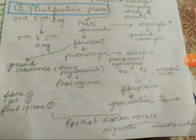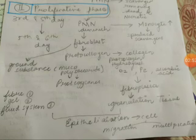In this phase, collagen is formed from procollagen via hydroxylase, requiring O2, Fe, and ascorbic acid. This produces fibroplasia, which forms granulation tissue. So ground substance along with granulation tissue — G and G — leads to epithelialization.